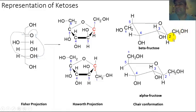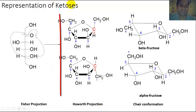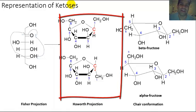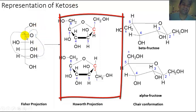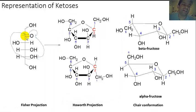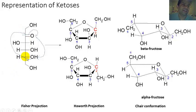Usually many textbooks have the Haworth projection as the best representation to depict a sugar molecule or simple monosaccharide. Important to remember: the anomeric carbon is carbon number 2 in ketoses, and carbon number 1 in aldoses — that's where the free aldehyde is. The stereochemistry determinant is carbon number 5, both in aldoses and ketoses.